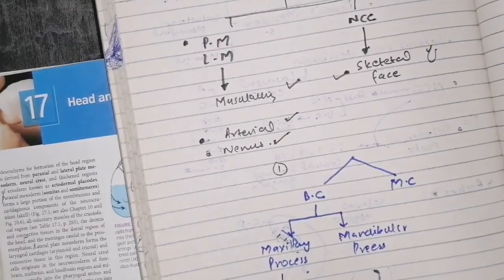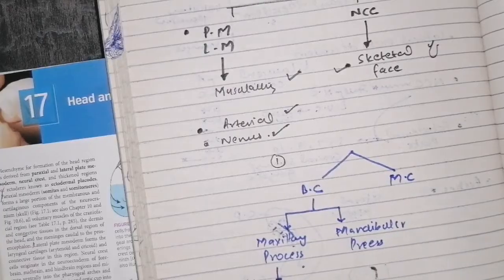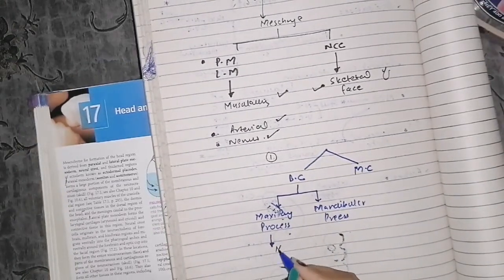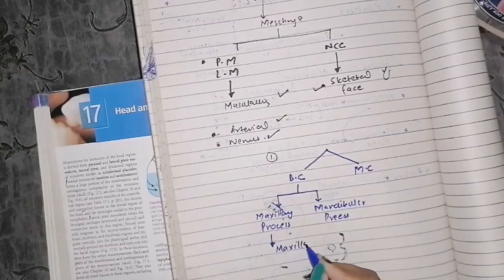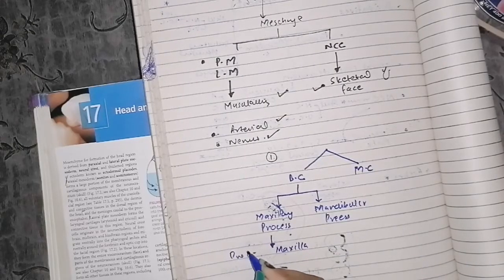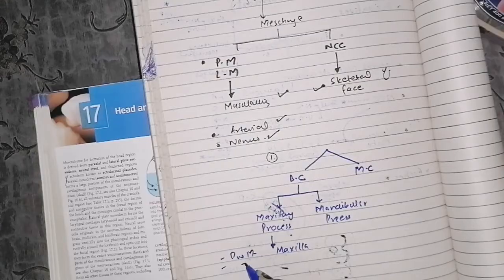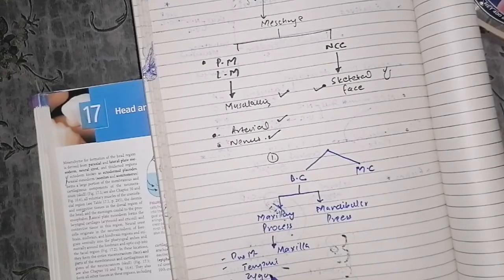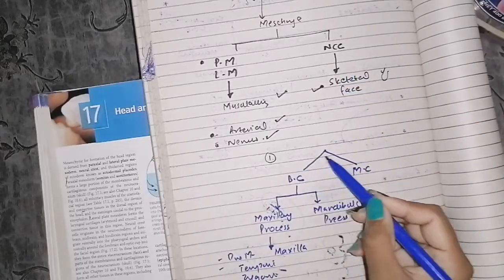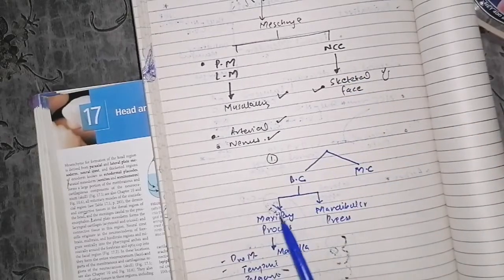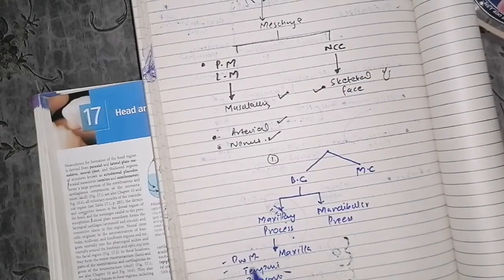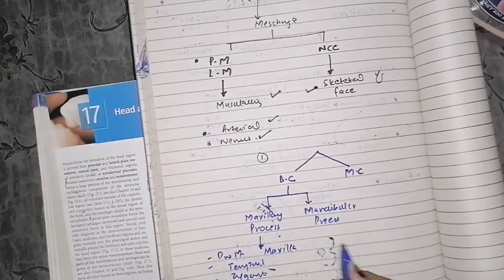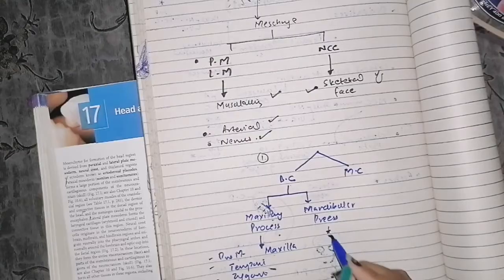The maxillary process undergoes intramembranous ossification. The bones it forms are: pre-maxilla, maxilla, part of the temporal bone, and the zygomatic bone. So from the maxillary process of the first pharyngeal arch, we get pre-maxilla, maxilla, temporal bone part, and zygomatic bone.